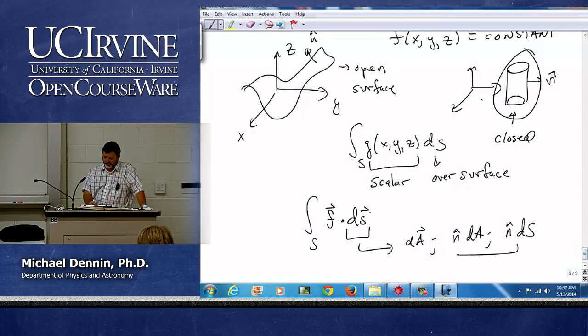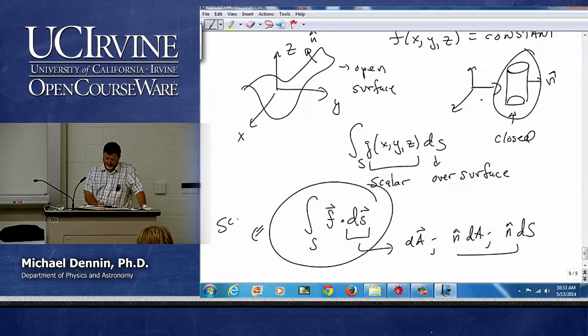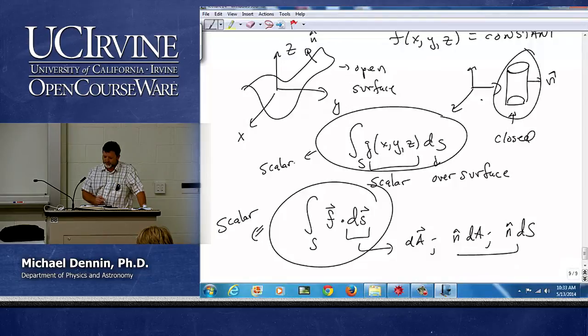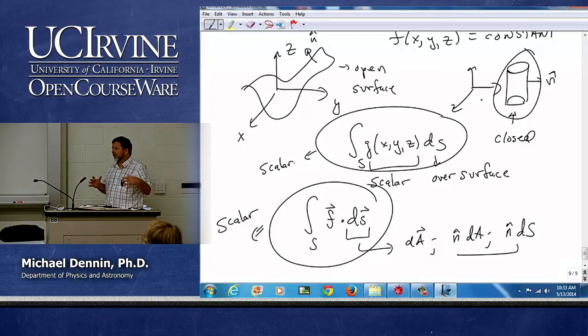Make sense? So again, notice this answer will be a scalar. And this answer will also be a scalar just because of the way it's defined. Because now we're just doing it over the magnitude of the surface. There's no direction involved.